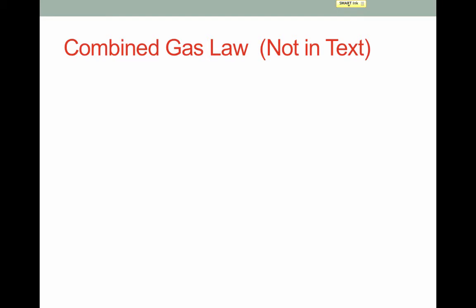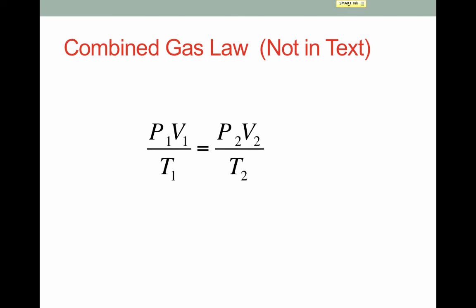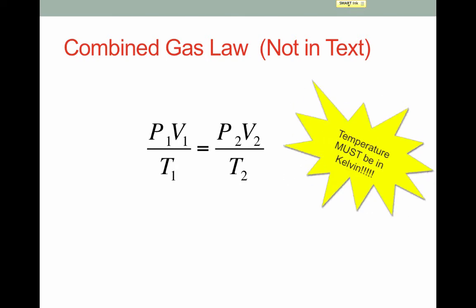We can take all of these equations and combine them into the combined gas law: initial pressure times initial volume over initial temperature equals final pressure times final volume over final temperature (P1V1/T1 = P2V2/T2). This is convenient because it contains all the individual equations. If we hold pressure constant, we're left with Charles' Law: V1/T1 = V2/T2. If we hold volume constant, we're left with Gay-Lussac's Law. You really only need to memorize the combined gas law to do any calculations. Remember, temperature must be in Kelvin.